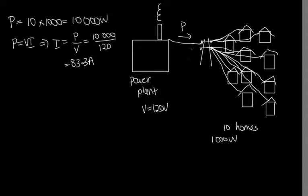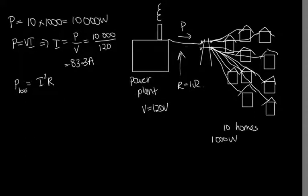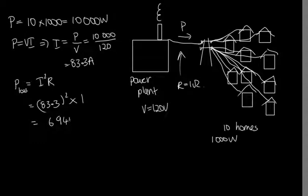The problem is that as electrons move conducting the current — whether AC or DC — they collide with the nuclei of the atoms making up the metal, and this loses energy. Wires carrying high current heat up, and in that heat loss we lose energy. We can work out the rate of energy loss using P = I²R. Assuming the wire has a resistance of 1 ohm, the power loss is 83.3² × 1 = 6,944 watts.